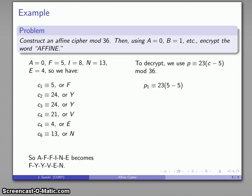If 5 is our first letter, the plaintext version is 0. Y is our second, 24 minus 5 times 23 reduced mod 36, and so on. And that recovers our original message.